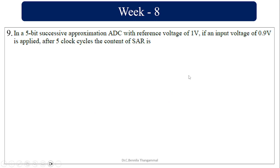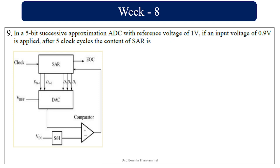In a 5-bit successive approximation ADC with reference voltage of 1 volt, input voltage VIN = 0.9 volts. The SAR is 5 bits. For the first cycle, SAR = 1, 0, 0, 0, 0. The DAC output voltage is V_reference / 2 = 0.5 volts. Since VIN (0.9) > V_DAC (0.5), SAR remains 1, 0, 0, 0, 0 and MSB is retained.